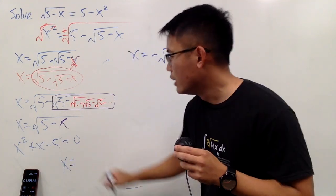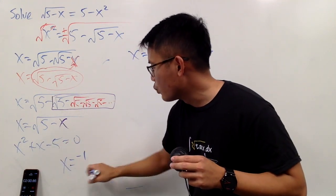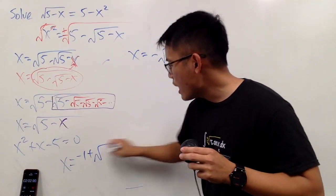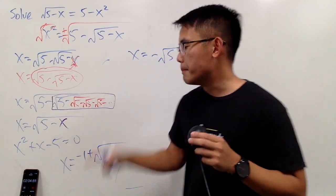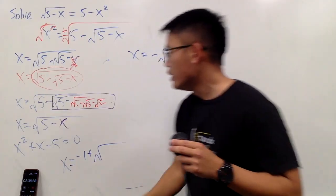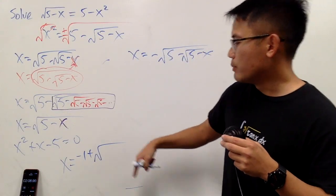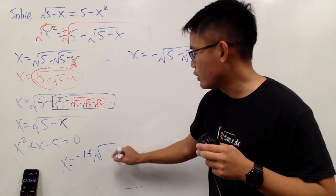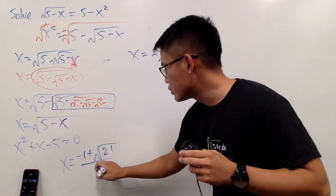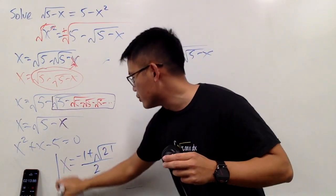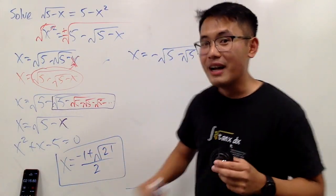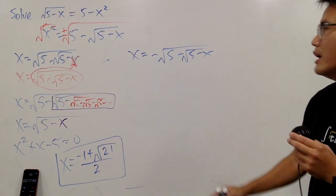Using the quadratic formula: x equals negative b, which is negative 1, plus the square root of b squared minus 4 times a times c. That's 1 squared minus 4 times 1 times negative 5, giving us 1 plus 20 equals 21 under the radical, all over 2 times 1, which is just 2. So x equals negative 1 plus the square root of 21, all over 2. That's the first answer.